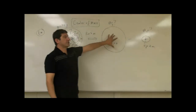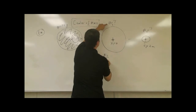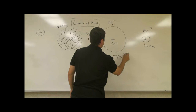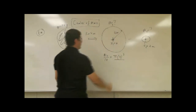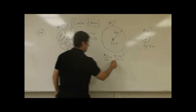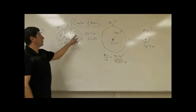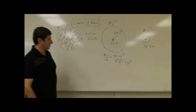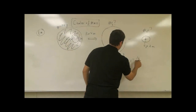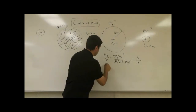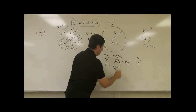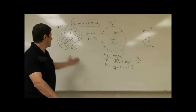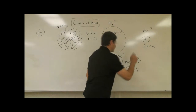Let's first calculate the mass of what the total solid would be. We say M1 divided by 10 kilograms equals the surface area of the full disc, pi times 4 squared, divided by the surface area of the actual object, which is pi times 4 squared minus pi times 1 squared. The pi's cancel, giving 16 over 16 minus 1, which is 16 over 15. So M1 equals 16 over 15 times 10, which is approximately 10.667 kilograms.